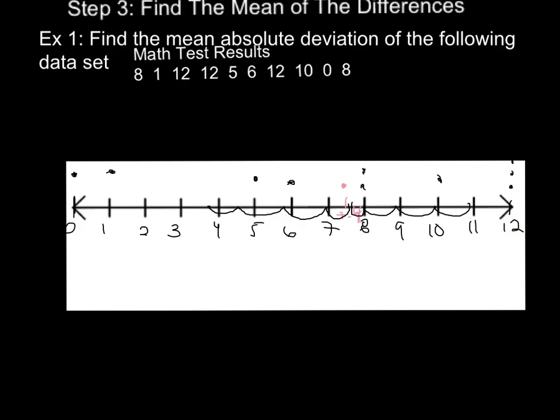So what that tells us is that the average of our data points, the average distance of our data points from the mean is 3.5 away. And if you notice, you should have about half of your data points within one mean absolute difference away from the mean in either direction. And we do, we have 1, 2, 3, 4, 5 not included within one mean absolute deviation.